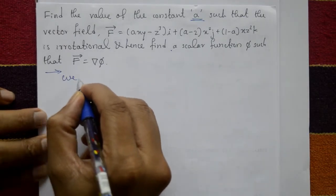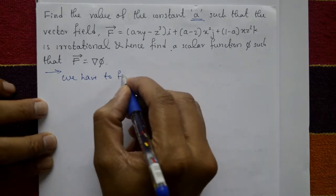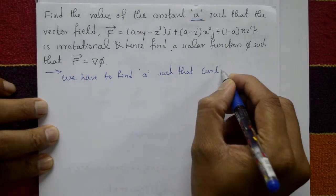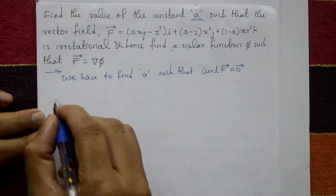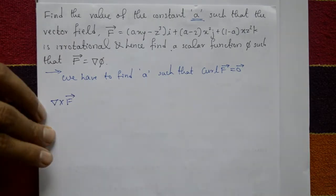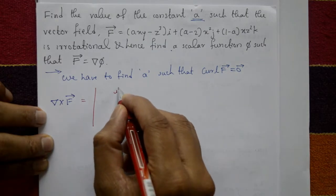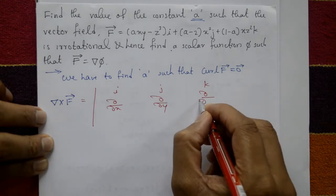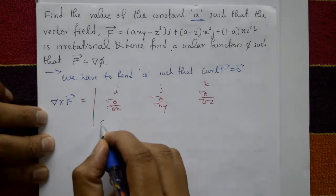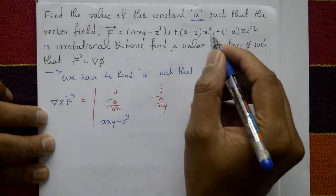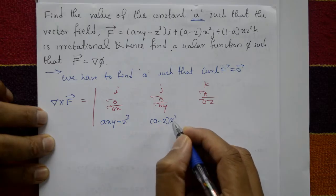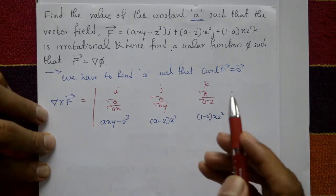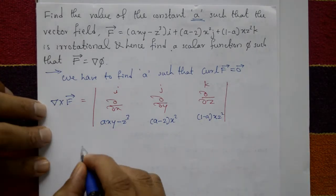For the solution, first we have to find the value of a such that f is irrotational. Irrotational means curl f equals zero. Now curl means del cross f, and del cross f is evaluated as a determinant using i, j, k with del/dx, del/dy, del/dz, with components axy minus z cubed, (a minus 2)x squared, and (1 minus a)xz squared.